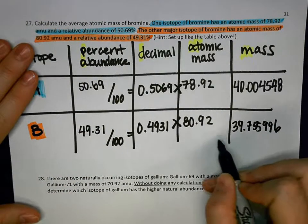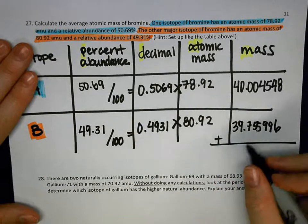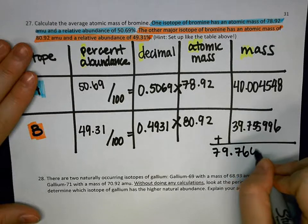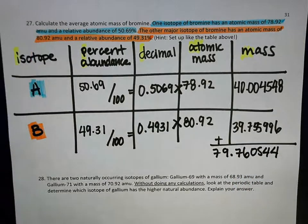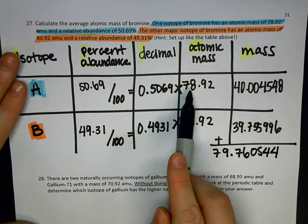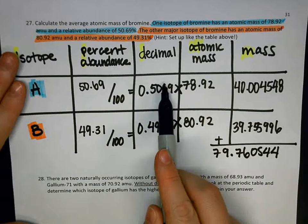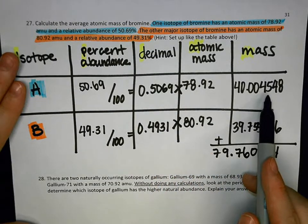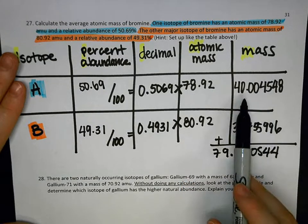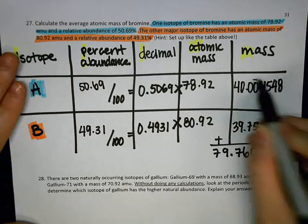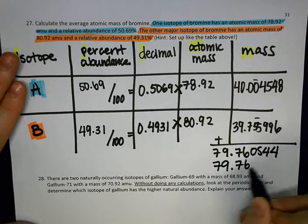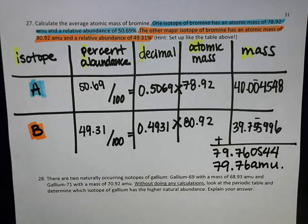Now the very last step, I need to take the numbers in this column and add them up. My rough number is 79.760544, and now we've got to figure out how many sig figs. This number had four sig figs, and this had four sig figs, so I multiplied it together. My answer would have four sig figs. All of these guys are going to have to be limited to two decimal points. When I round this, I get 79.76 AMU, and that's our final answer.